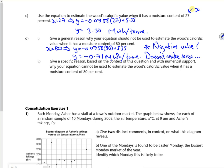Give a specific reason based on the context of the question and with numerical support why it can't be used. So that's quite simple, isn't it? So y is minus 0.71 when x is 80. It doesn't make sense to this. It's just kind of the same as above, isn't it, really? It doesn't make sense.